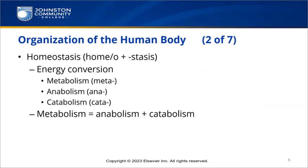Here we have homeostasis. Homeo means same and stasis means controlling. Homeostasis is a normal process of maintaining balance within the body. Part of the balancing act the body is involved in is the process of energy conversion. Anabolism is the process of building up, while catabolism is the process of breaking down. Metabolism is the total process of building up and breaking down the body's energy stores.